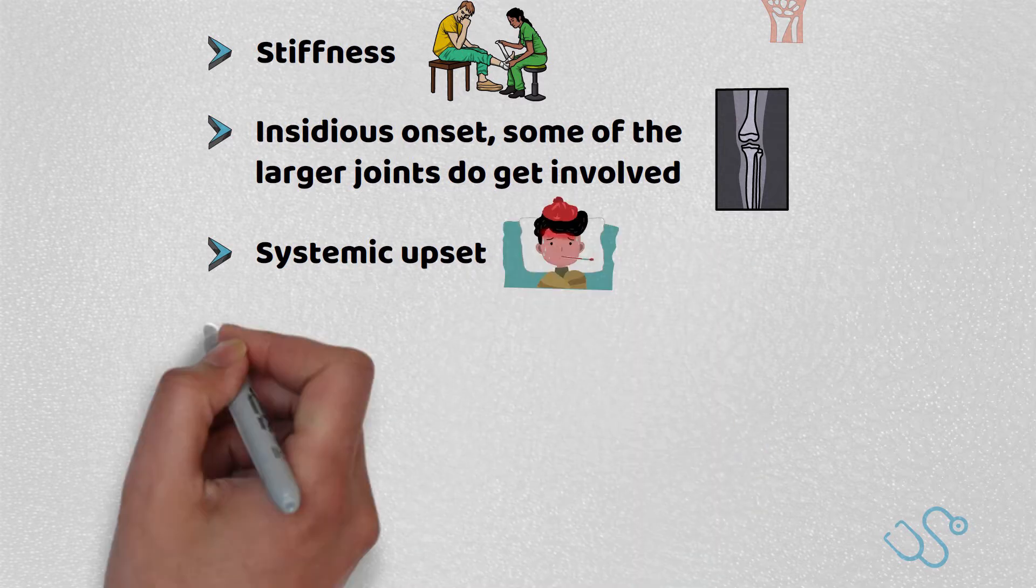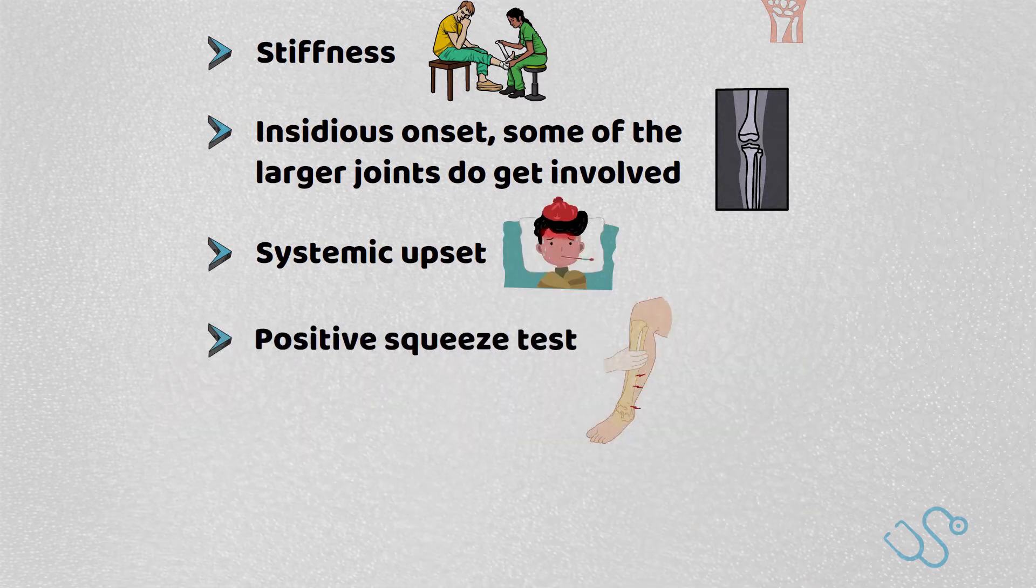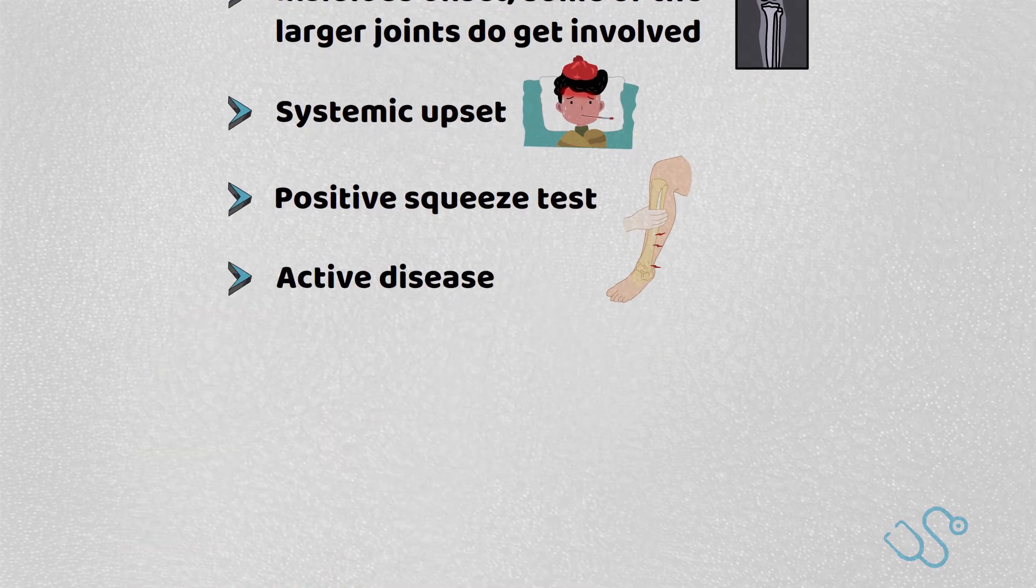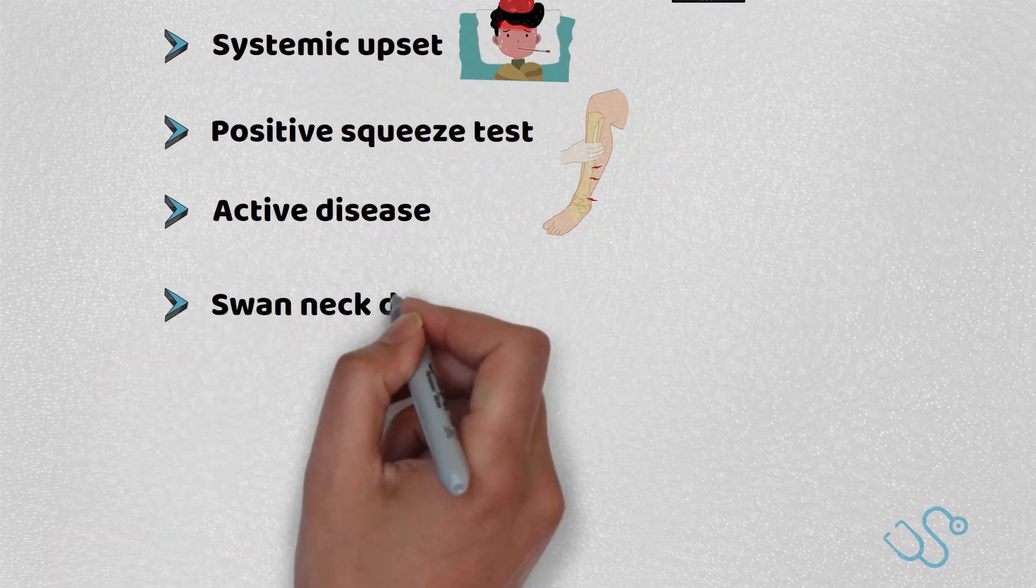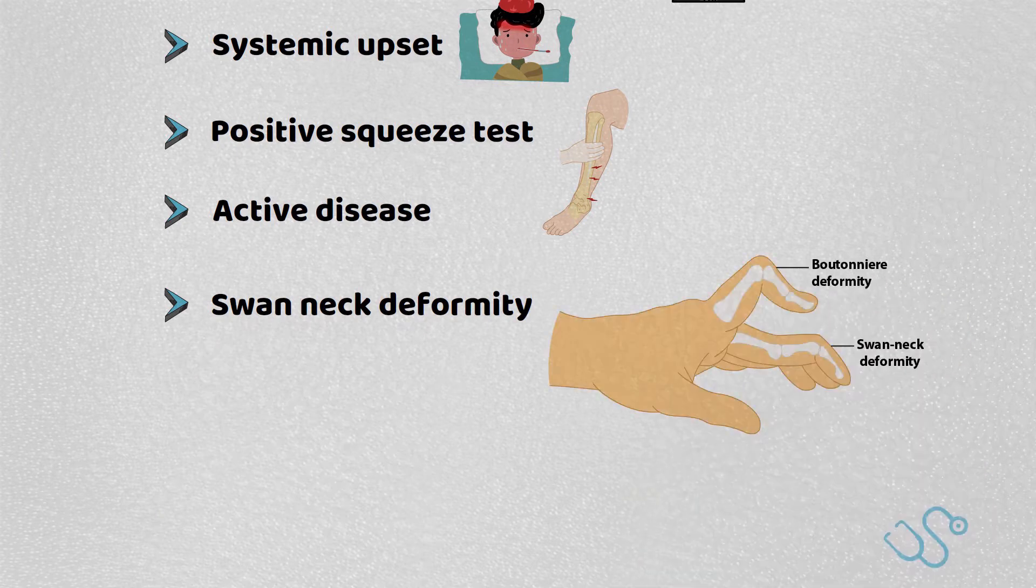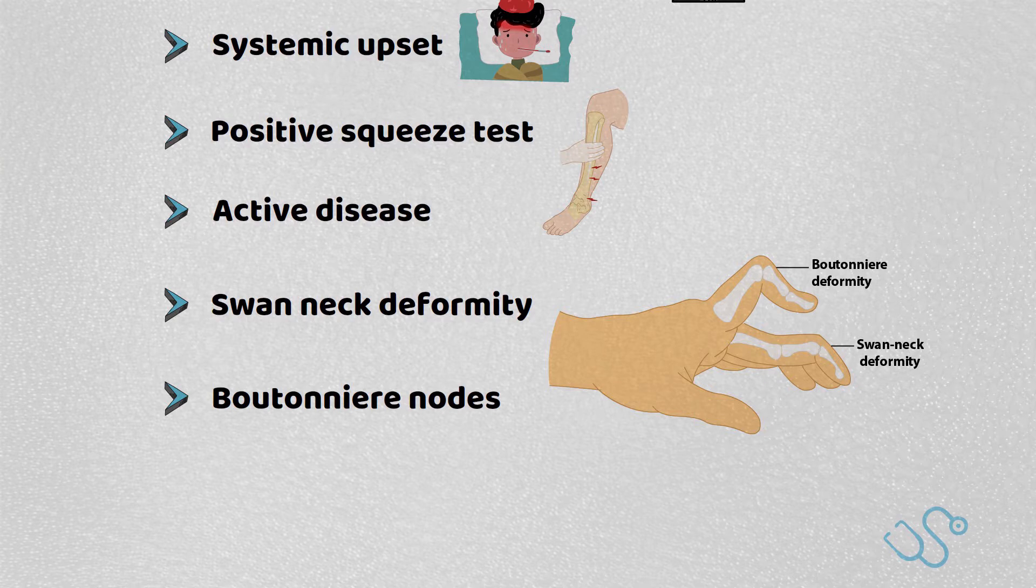Patients may also have a positive squeeze test across their hands and feet, indicating active disease. Later features include swan neck deformity of the fingers and boutonniere nodules on the distal interphalangeal joints. These are rarely, however, seen on presentation.